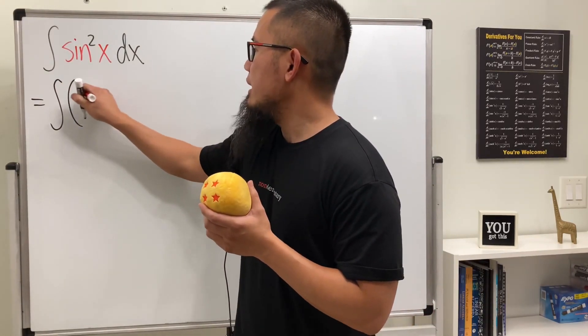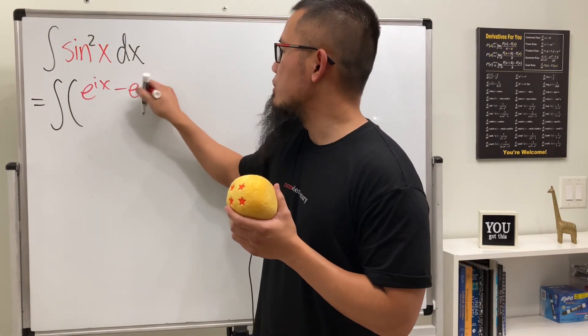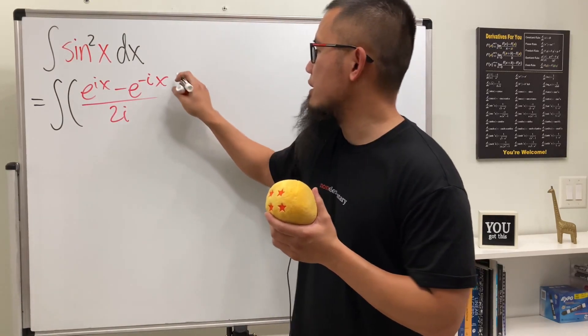This right here is the same as integrating e to the ix minus e to the negative ix, all over 2i. Yes, that's the complex definition for sine.